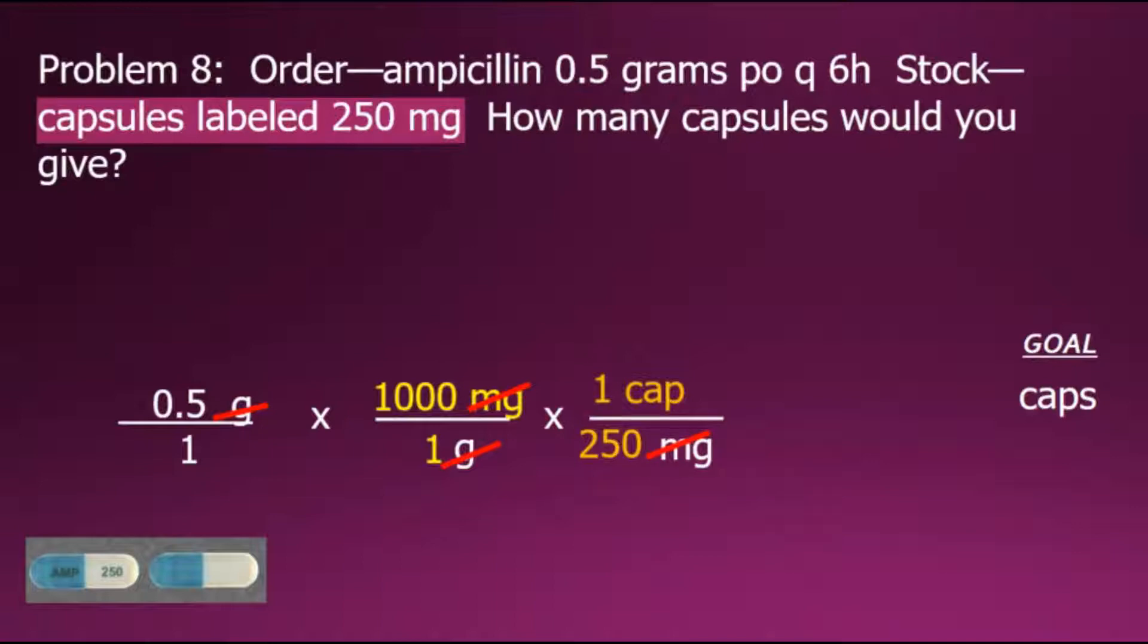Next, we multiply these three fractions together: numerators together for the new numerator, denominators together for the new denominator. The remaining unit is capsules, which was the goal. One last step: we do the division. 500 divided by 250 gives us a final answer of 2 capsules for this order.